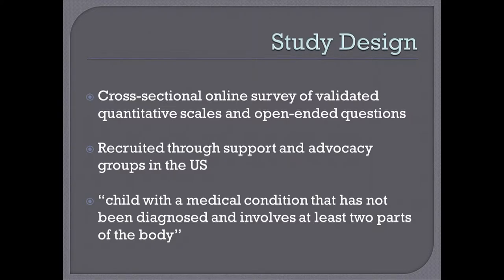My study design was a cross-sectional online survey of multiple scales and open-ended questions. I recruited through support and advocacy groups such as Syndromes Without a Name (SWAN) and You Are Our Hope. The criteria was that you had a child with a medical condition that had not been diagnosed and involved at least two parts of the body, aiming to capture those who likely had underlying syndromes.